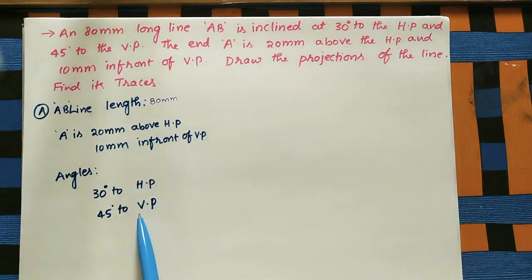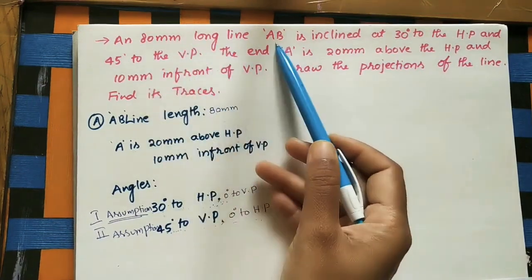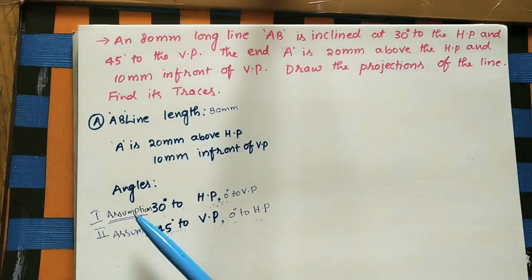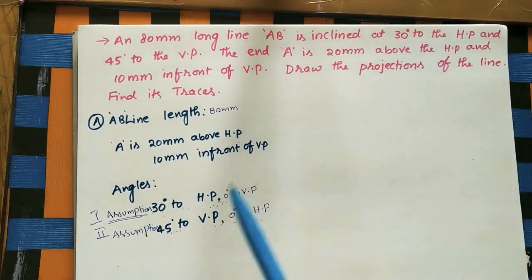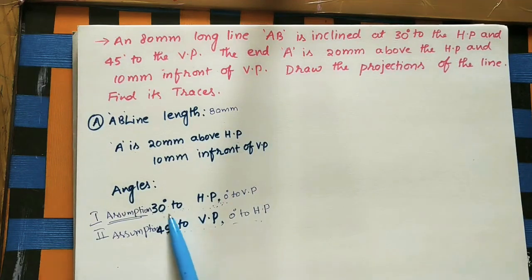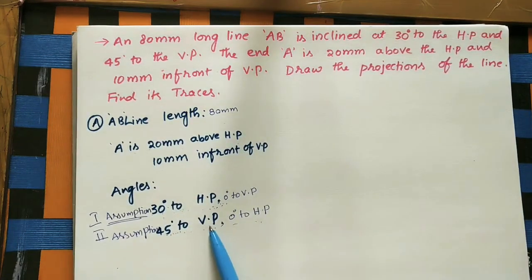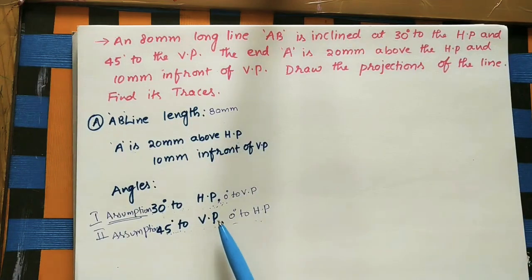Whenever two angles are given for the same line — one with the horizontal plane and one with the vertical plane — we take two assumptions. First assumption: angle with HP is 30 degrees and zero degrees to the VP. Second assumption: angle with VP is 45 degrees and zero degrees to the HP.